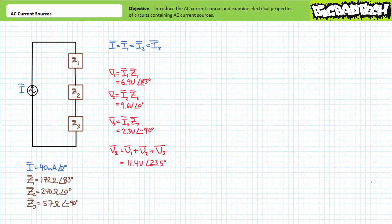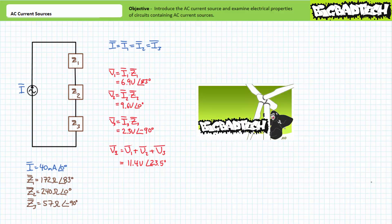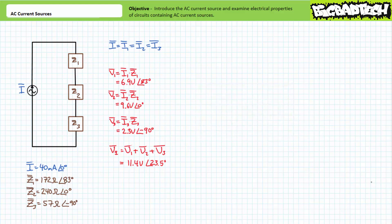Circuit analysis with current sources seems suspiciously easy — it should, because that's the point. A current source is a mathematically pure entity that allows us to assume current remains at a constant fixed value despite changes in impedance. We'll learn in later lectures that one can substitute specific configurations of current sources for voltage sources and vice versa without unduly affecting the electrical properties of a larger circuit. Sometimes circuit analysis is much easier using current sources, and sometimes it's easier using voltage sources; if we can find an equivalency between the two methods, we're allowed to make a substitution.